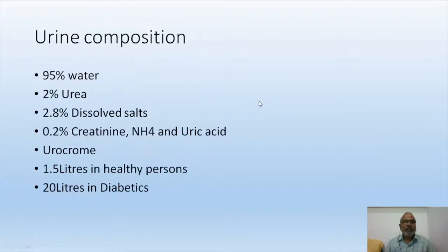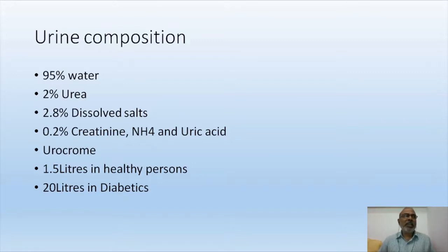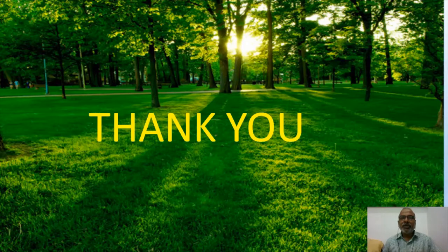Urine consists of approximately 95% water, 2% urea, 2.8% dissolved salts, and 0.2% harmful chemicals such as creatine, ammonia, ammonium, and uric acid. Urine is light yellow in color due to a pigment called urochrome. A healthy person eliminates 1.5 liters of urine every day, while a person with diabetes insipidus or diabetes mellitus may eliminate up to 20 liters per day.